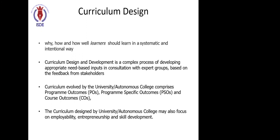At least it requires a process of three months to ensure — even just to update a particular course. If you are going to introduce a particular program, imagine how much time and teamwork has to be there. You also have to ensure what are the POs, Program Specific Outcomes, and Course Outcomes, and most importantly, professional attributes. All four components are very essential.